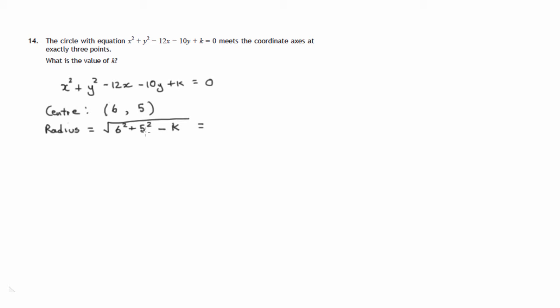Now 6 squared is 36, 5 squared is 25, and that comes to 61. So your radius is the square root of 61 minus k.